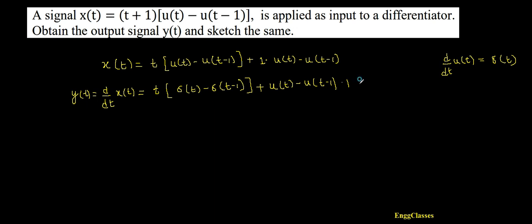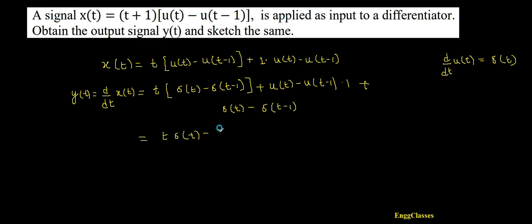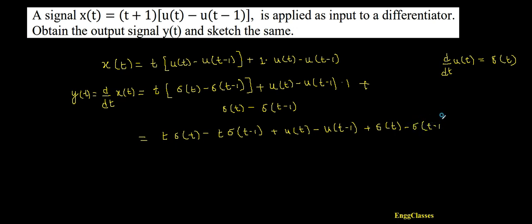Plus the term [u(t) - u(t - 1)] differentiated gives δ(t) - δ(t - 1). So expanding everything, I get t·δ(t) minus t·δ(t - 1), plus [u(t) - u(t - 1)], plus δ(t) minus δ(t - 1).